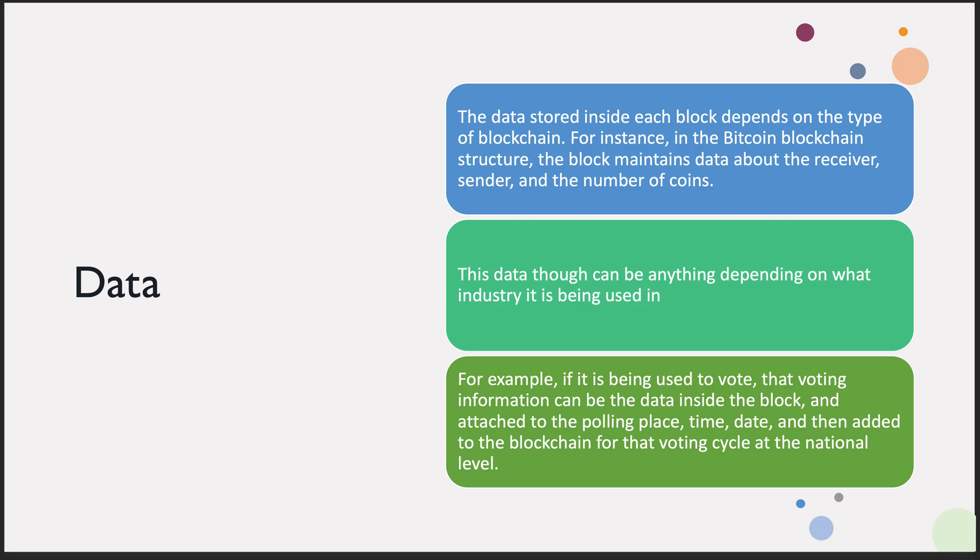The data stored in each block depends on the type of blockchain. If I sent 100 Bitcoin to Tommy, that would be the data. For voting, the data would include the polling place, date, time, and who you voted for — with the Genesis block probably at the state or federal level. The big drawback for voting is that it needs to be much quicker than every 10 minutes for processing, otherwise news channels won't get instantaneous results. The data can be anything depending on the industry.